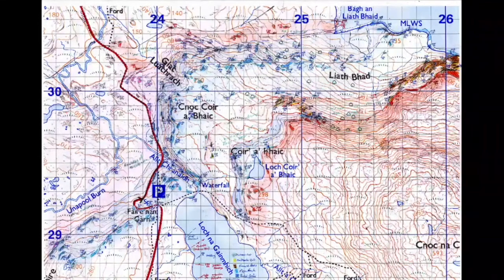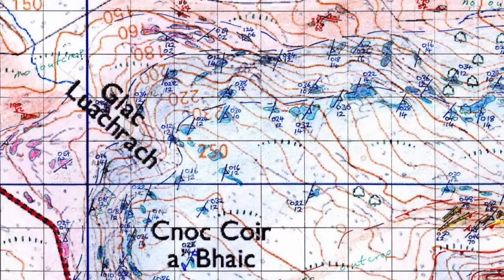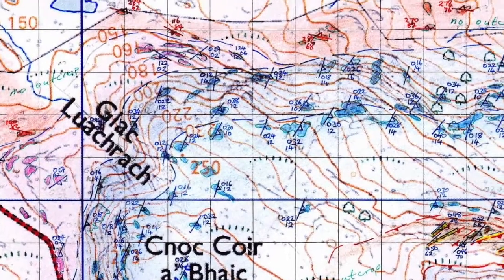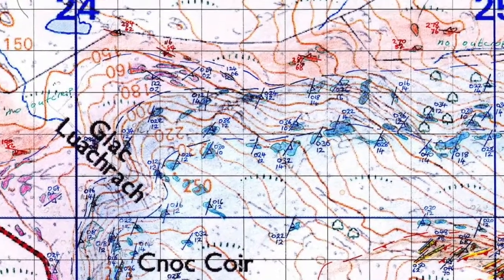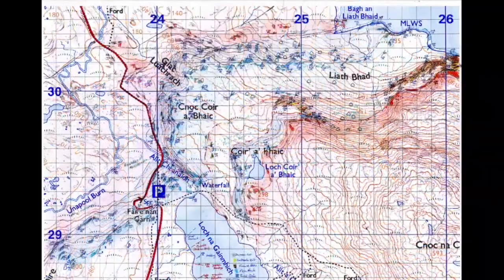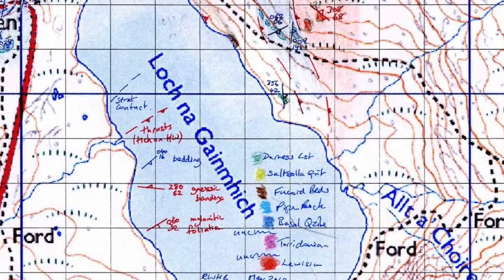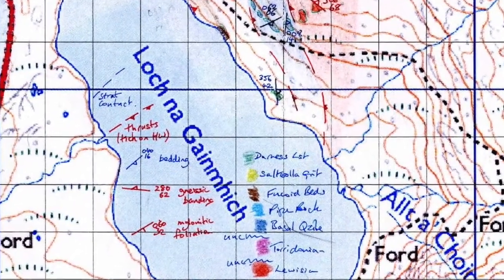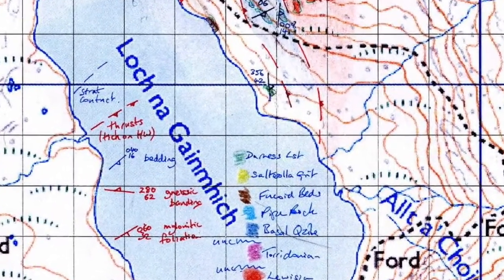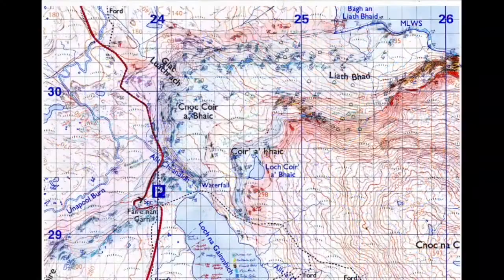This is the map area. It's worth looking at the amount of data that the map records, which shows you the virtue of collecting a lot of bedding readings particularly. The map has a key, and the boundaries are drawn through the map area. Let's look at some of the detail.